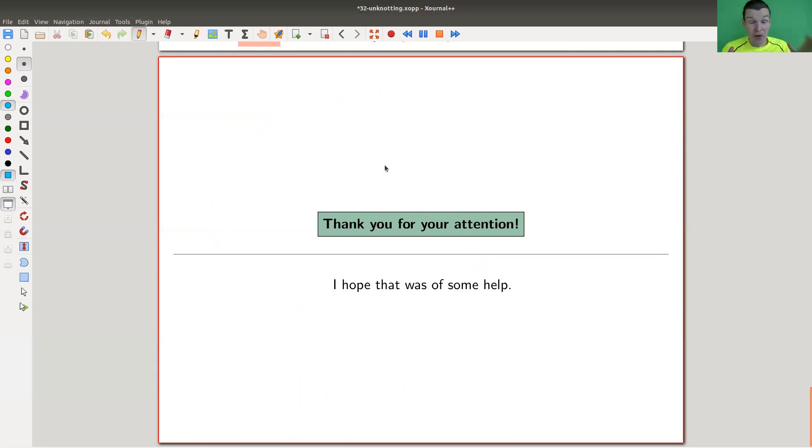Khovanov homology is really fantastic, detects the unknot. It's an algorithmic way to detect the unknot. Let me say it again: if you throw a knot diagram at me, I could compute Khovanov homology and can tell you the answer, is this an unknot or not. It's actually so simple that it works the other way around as well.